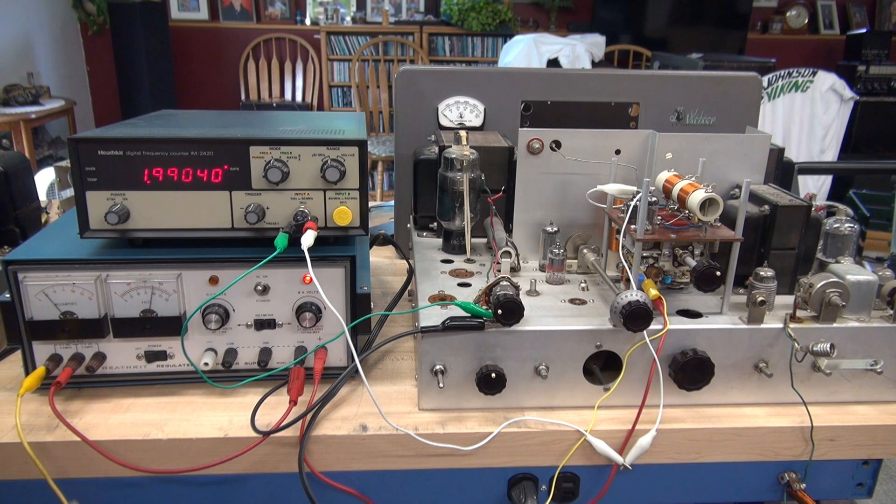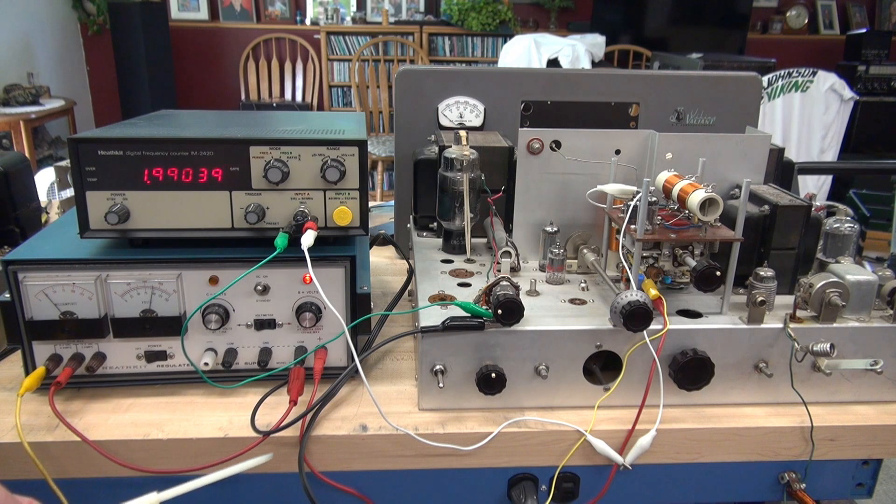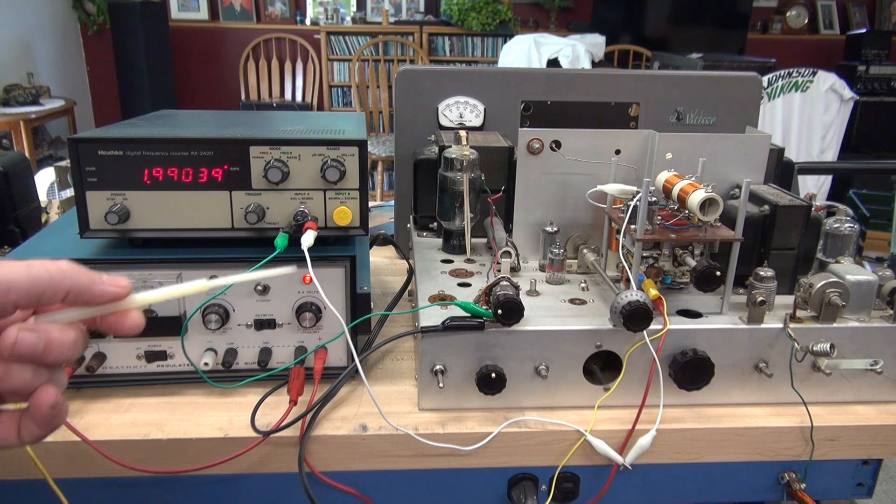Equipment required. We have a Heathkit high voltage power supply, this is a model IP2717 and a Heathkit IM2420 frequency counter. You're also going to have some assorted jumpers and a plastic screwdriver for adjusting the capacitors in the VFO.